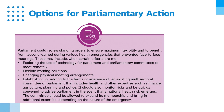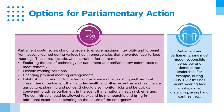Further preparedness options include flexible working solutions and changing physical meeting arrangements. Parliament could also establish or add to the terms of reference of an existing multi-sectoral committee that includes health and other expertise such as finance, agriculture, planning, and police. This committee should monitor risks and be quickly convened to advise Parliament when a national health risk emerges, with the ability to expand its membership and bring in additional expertise depending on the nature of the emergency. Parliament and parliamentarians must model responsible behaviour and demonstrate leadership — for example, during COVID-19, this meant wearing face masks, practising social distancing, and using hand sanitiser.